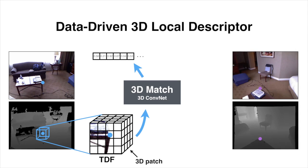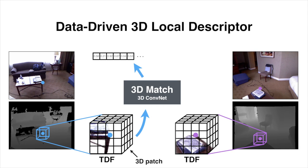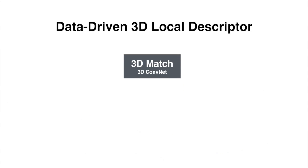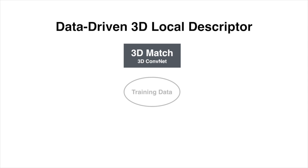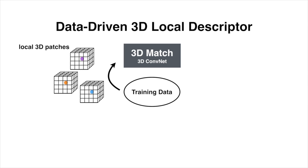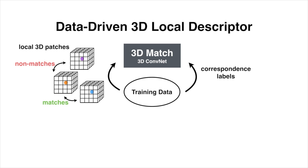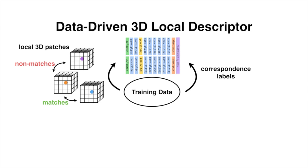The more similar two descriptors are, the more likely there exists a correspondence between two points. Optimizing 3DMatch requires massive amounts of training data, which come in the form of 3D volumetric patches containing local surfaces of interest points and their ground truth correspondence labels. We feed pairs of matching and non-matching patches to train our 3D ConvNet in a Siamese fashion.